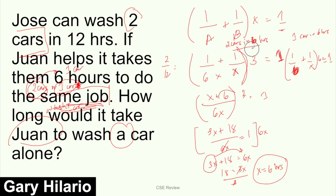Then we move X to the other side and leave it there. 18 equals 6X minus 3X which gives you 3X. Divide both sides by 3 to cancel the 3. 18 divided by 3 is 6. So X equals 6. The answer is 6 hours, if they washed two cars in 6 hours.